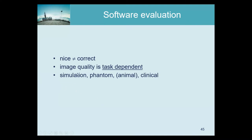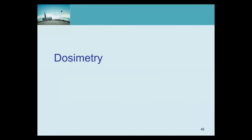Very often we do simulations, and if those don't work you should do something else. If simulations work, you go to phantoms — and it's always worse on phantoms because more things can go wrong. Then often we go to animals and then to the clinic. However, in PET, because we work with tracer amounts, we can quickly go to patients. In MR it's even easier since MR is considered completely harmless, so MR researchers can do novel things directly in patients.